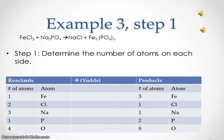Some of you might be wondering why on the product side we have two phosphorus atoms and eight oxygen atoms. Think back to your algebra days — that two outside the parentheses will be distributed through. So it's like having one phosphorus atom times two equals two, and four oxygen atoms times two equals eight.